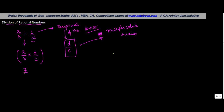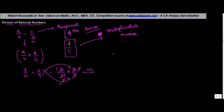Let's say you had a situation where you had 7 upon 21 divided by 3 upon 9. You take 7 upon 21 as it is, and instead of dividing by 3 upon 9, you multiply it by 9 upon 3 — the denominator becomes the numerator and the numerator becomes the denominator. So 3 goes into 9 three times, 3 goes into 21 seven times, and 7 goes into 7 one time, leaving us with 1 upon 1, which equals 1.